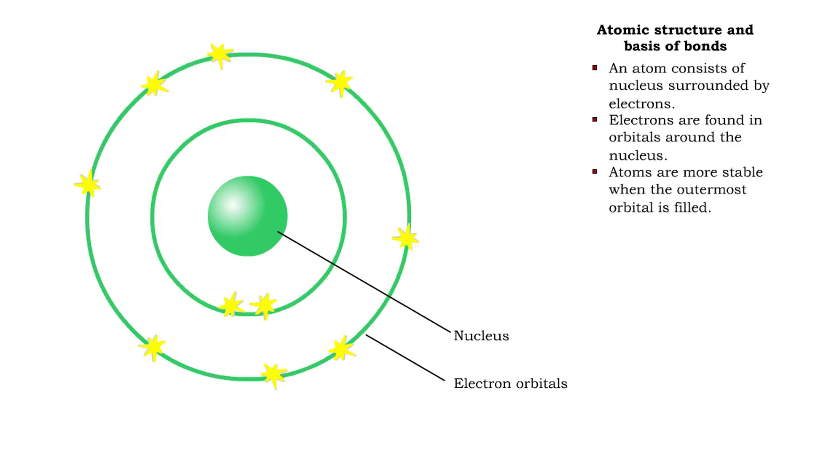Atoms are most stable when their outermost orbital is filled. Usually, the outermost orbital contains eight electrons.